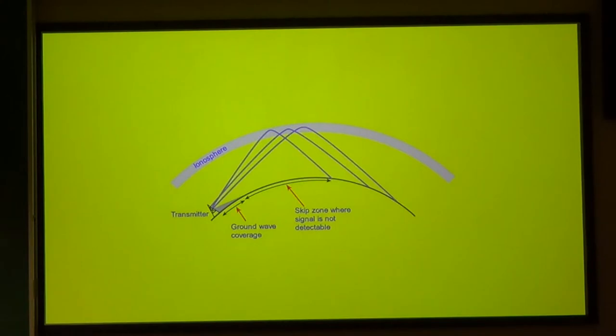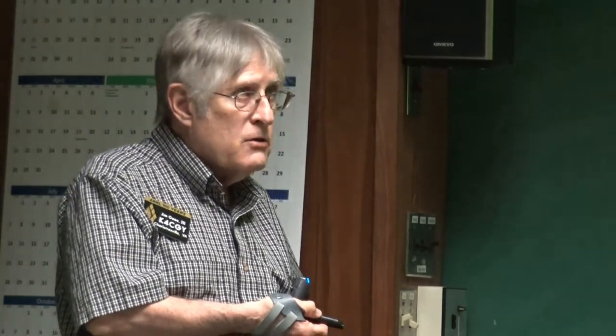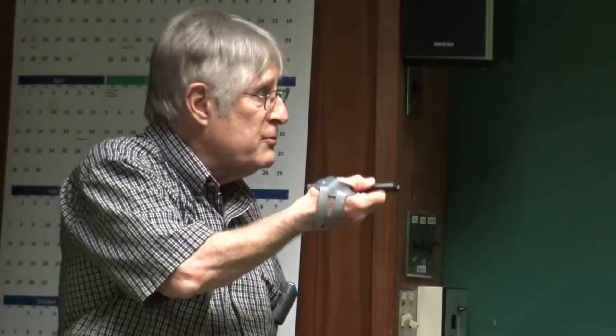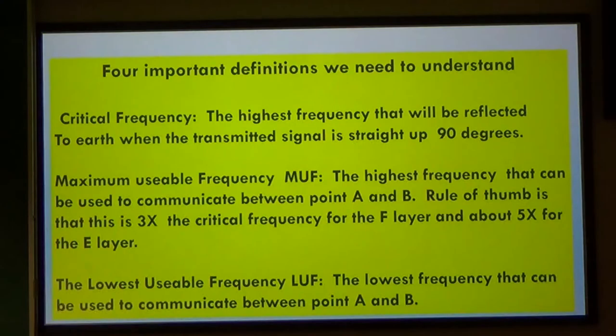The skip zone is where the signal is not detectable — it's skipping over that area, not where we're working stations. The F2 skip is about 1,800 miles for the first skip. If the ionosphere is in good shape, you can get multiple skips — once the signal skips over and reflects back from the Earth to the ionosphere, it does another skip. Each subsequent skip is weaker.